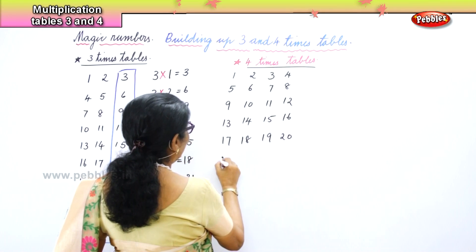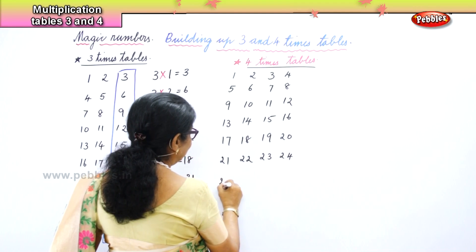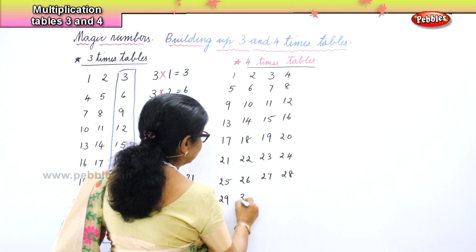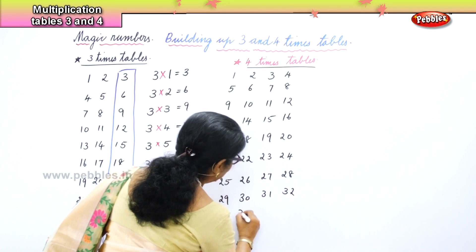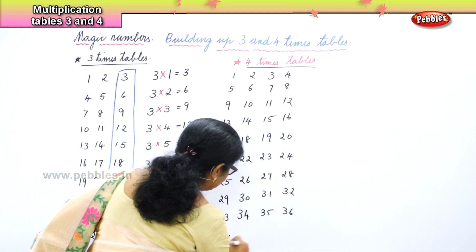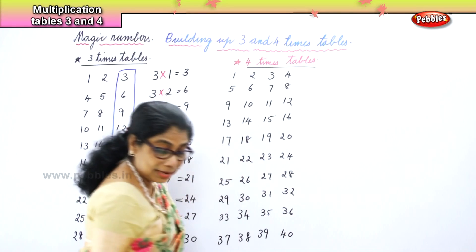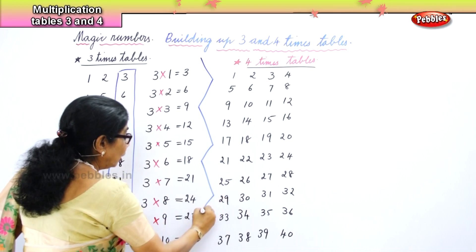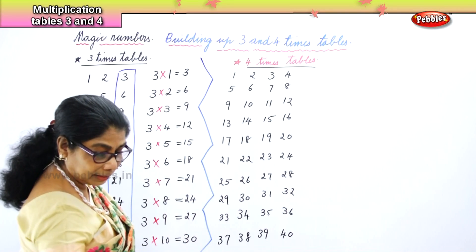Next: twenty-one, twenty-two, twenty-three, twenty-four. Next: twenty-five, twenty-six, twenty-seven, twenty-eight. Next: twenty-nine, thirty, thirty-one, thirty-two. Next: thirty-three, thirty-four, thirty-five, thirty-six. Finally: thirty-seven, thirty-eight, thirty-nine, forty. Now we wrote numbers up to forty — the magic numbers are there, and we got the four times table. All you need to do is box the last number.